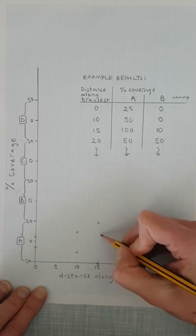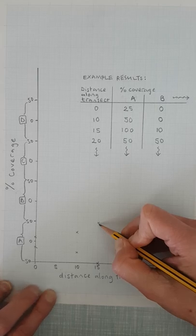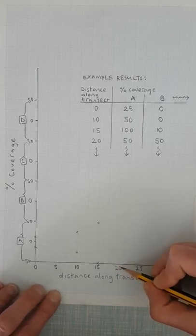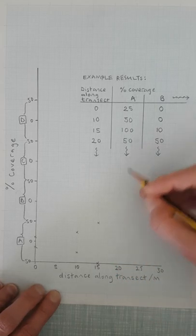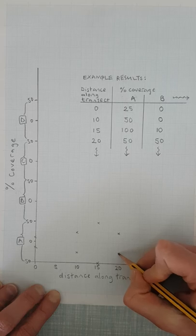And then at 20 meters we've got 50 again, so it's gone back down and we now don't have the whole quadrat covered with A.